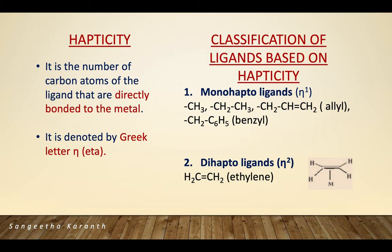A monohaptoligand (η1) has one carbon directly attached to the metal. Examples include methyl, ethyl, allyl, and benzyl ligands. A dihaptoligand (η2) has two carbon atoms attached to the metal — for example, the ethylene ligand, where two carbon atoms are bonded to the metal.